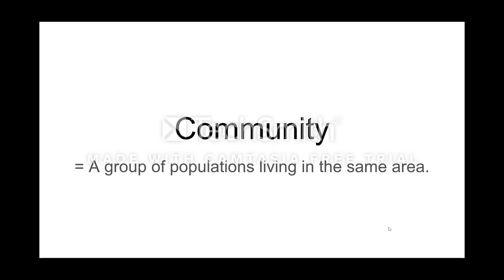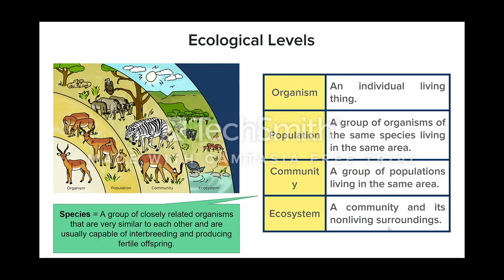A community is a group of populations of all the various living things that live in that same area — got to get our definitions right, it's a big deal in bio. When we're talking about our ecological levels, you can see where that community sits within the hierarchy, from one organism to a population, then the community, and then the ecosystem. The ecosystem includes all biotic and abiotic factors, but the community is all of the living things of different species — their groups of populations in that same area.